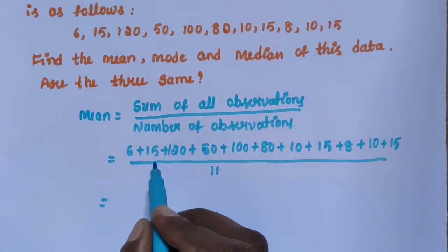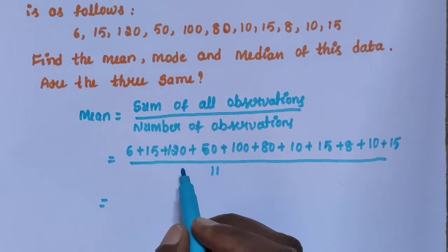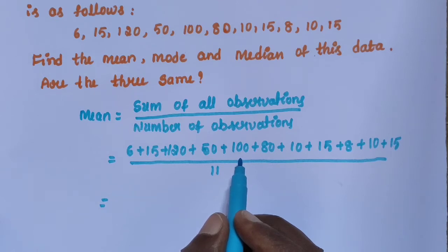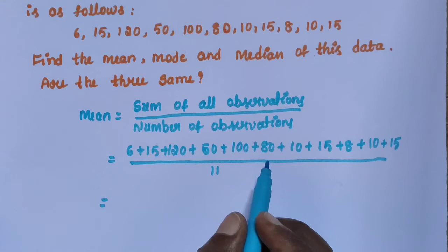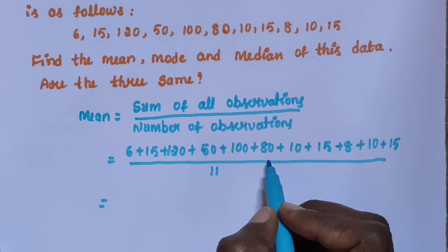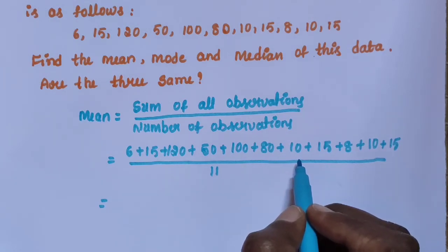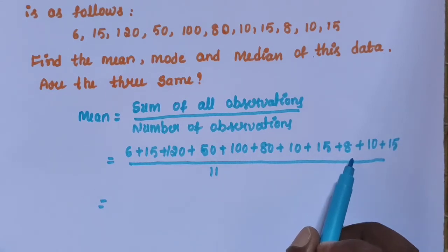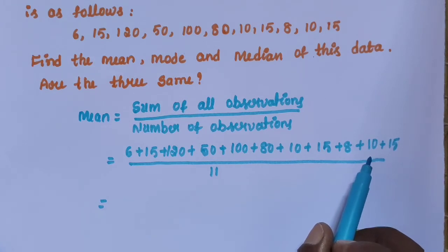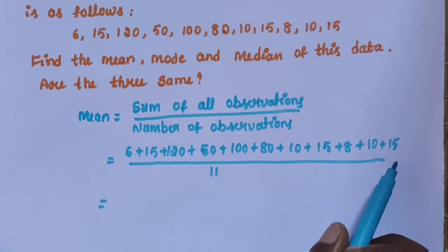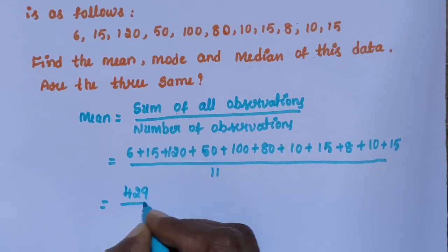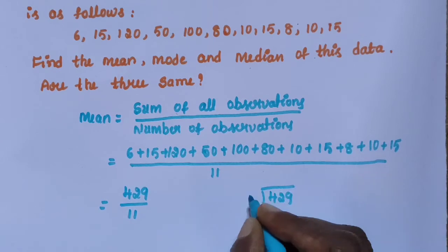Calculating the sum: 6 + 15 = 21, + 120 = 141, + 50 = 191, + 100 = 291, + 80 = 371, + 10 = 381, + 15 = 396, + 8 = 404, + 10 = 414, + 15 = 429. So 429 divided by 11 equals 39.